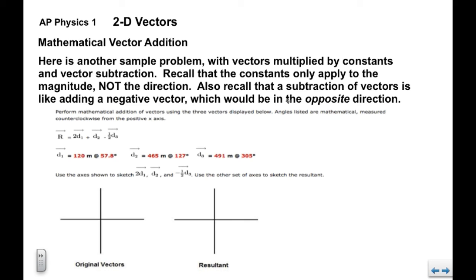And also recall that when you subtract the vector, it's like adding a negative vector. The negative vector would be in the opposite direction. So if d3 is at 305, 305 is in quadrant three, we would subtract 180 and that would be the direction of negative d3.